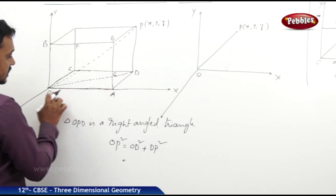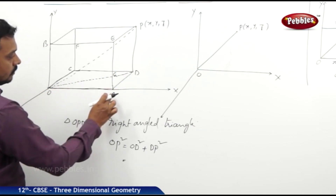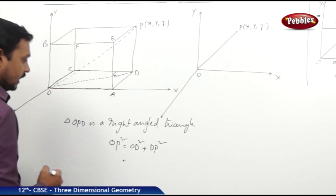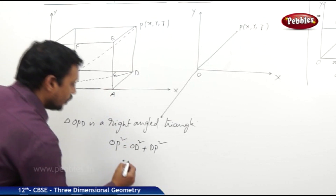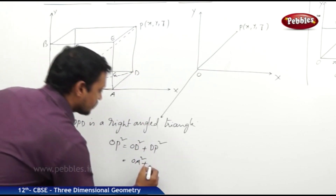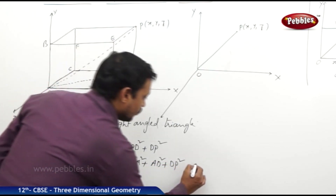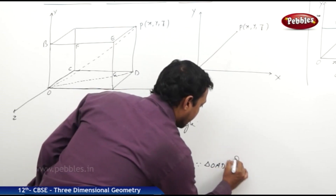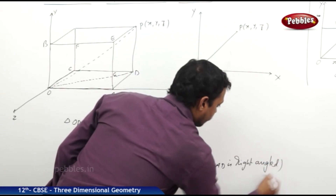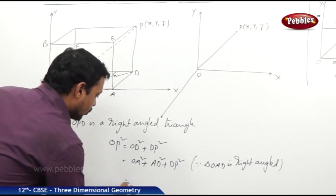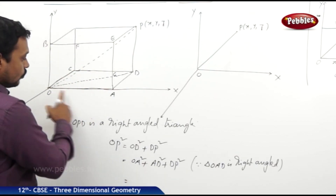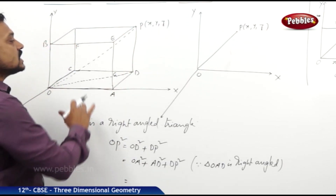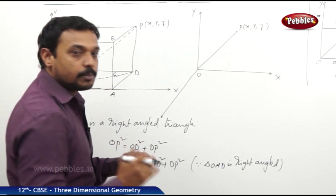Therefore, OP² = OA² + AD² + DP². Now, OA equals HP, which is the distance of point P from the yz-plane, so OA = x, giving OA² = x². AD equals EP, the distance of P from the xz-plane, so AD = y, giving AD² = y². D is the foot of the perpendicular from P to the xy-plane, so DP = z, giving DP² = z².